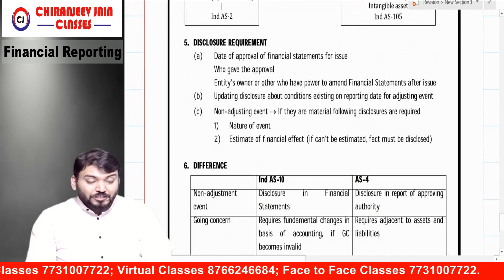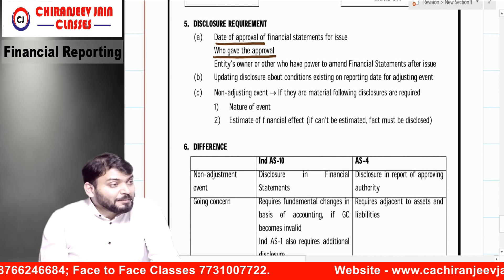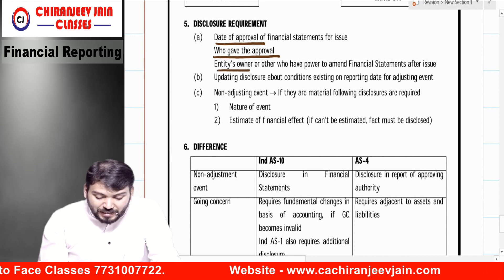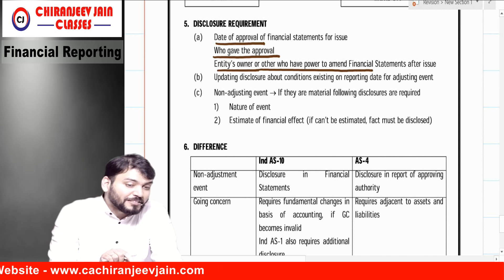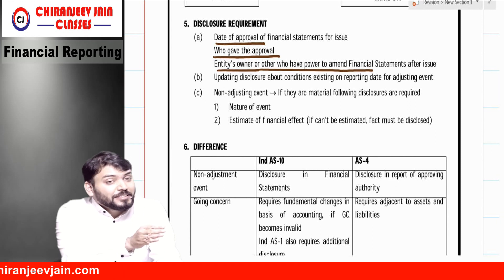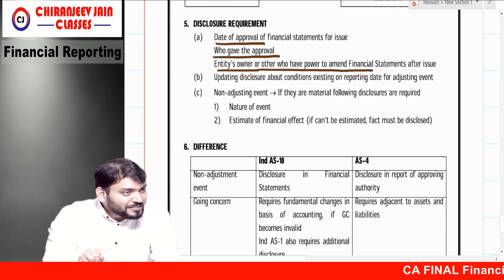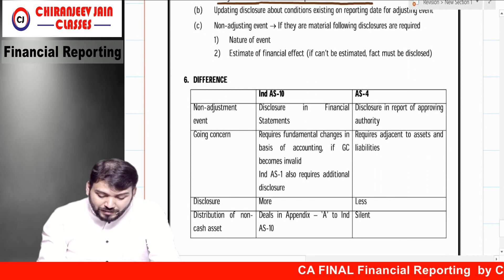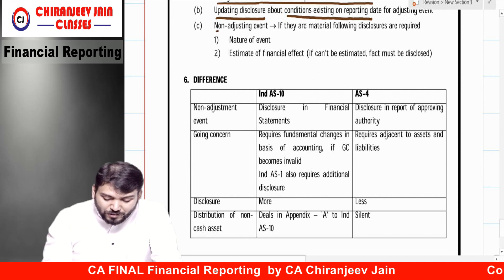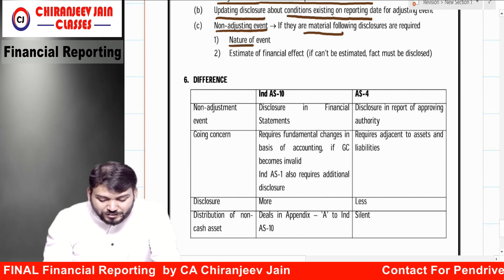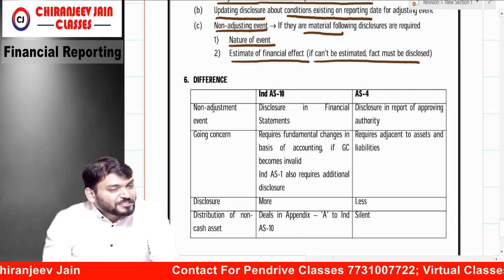Disclosure requirements under IND AS 10: the date of approval of financial statements and who gave approval must be disclosed; the names of persons with power to amend financial statements after approval (e.g., entity owners with such power per articles of association) must also be disclosed. Updating disclosures about conditions existing on the balance date are required. For non-adjusting events where the amount is material, the nature of the event and an estimate of its financial effect must be disclosed; if it cannot be estimated, that fact must be disclosed.